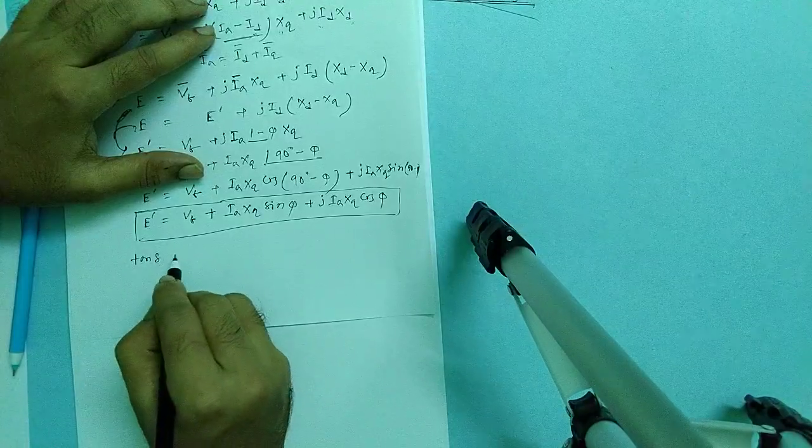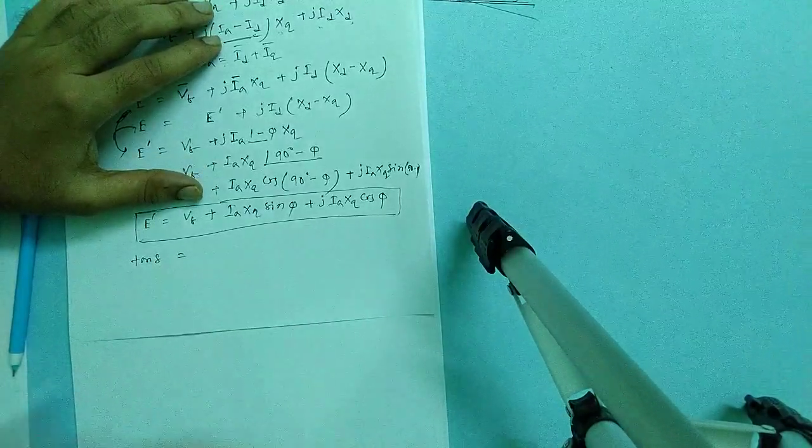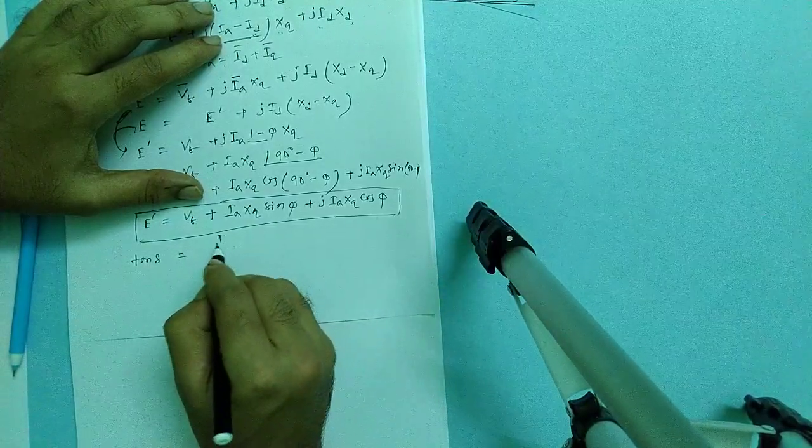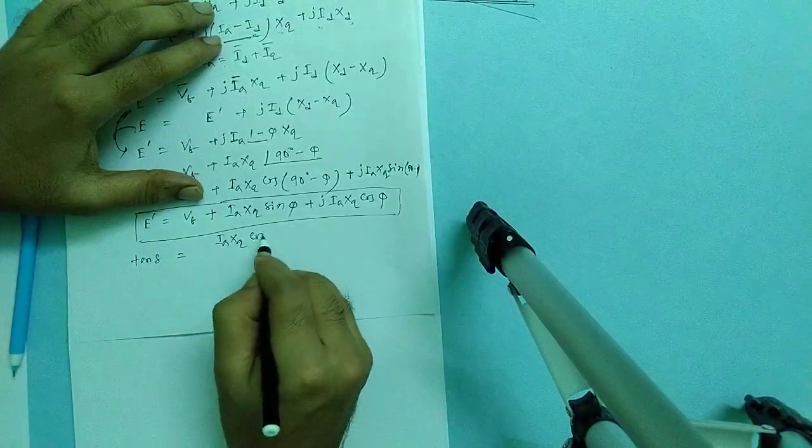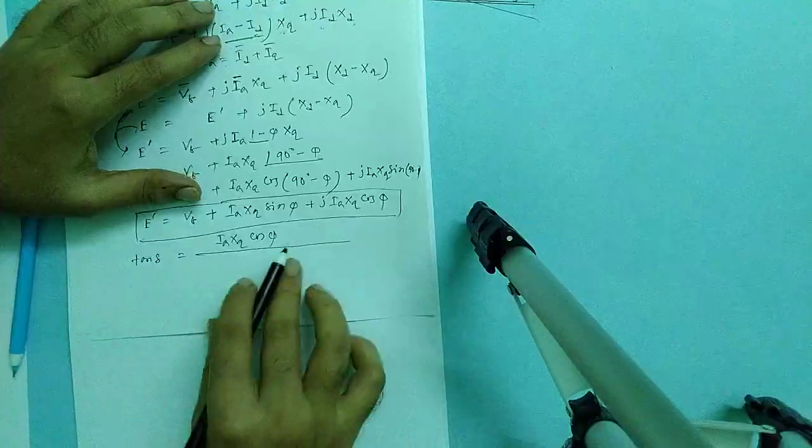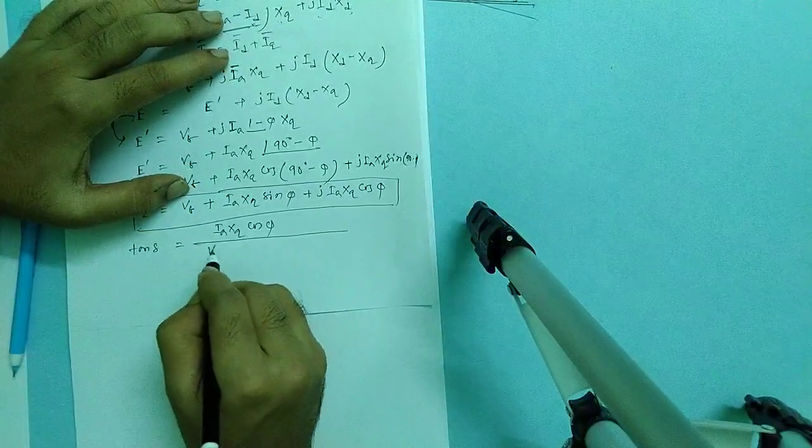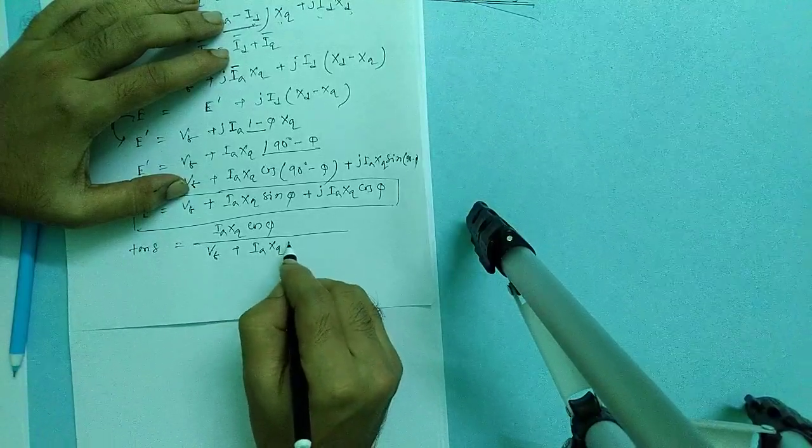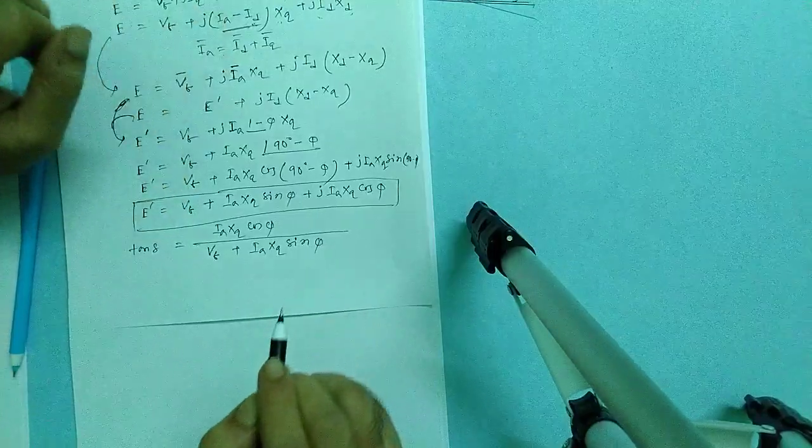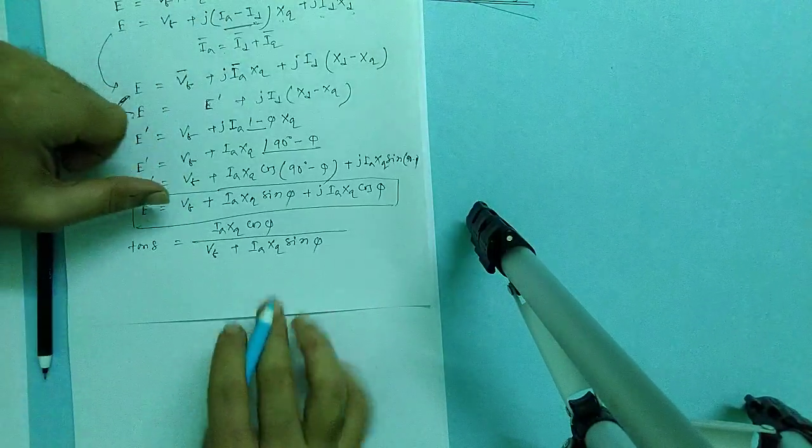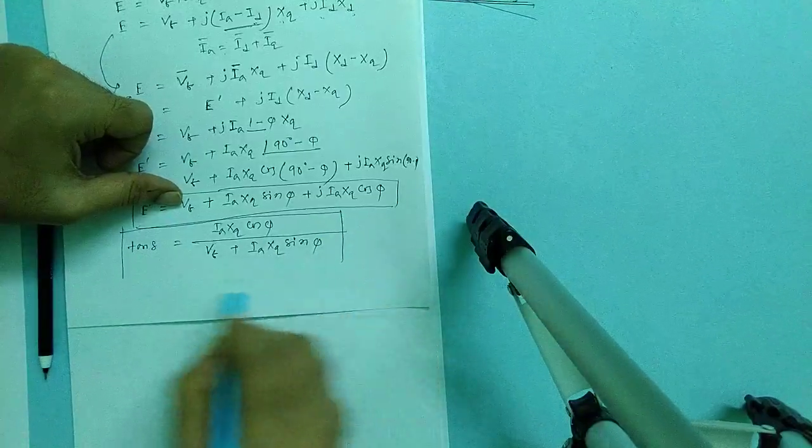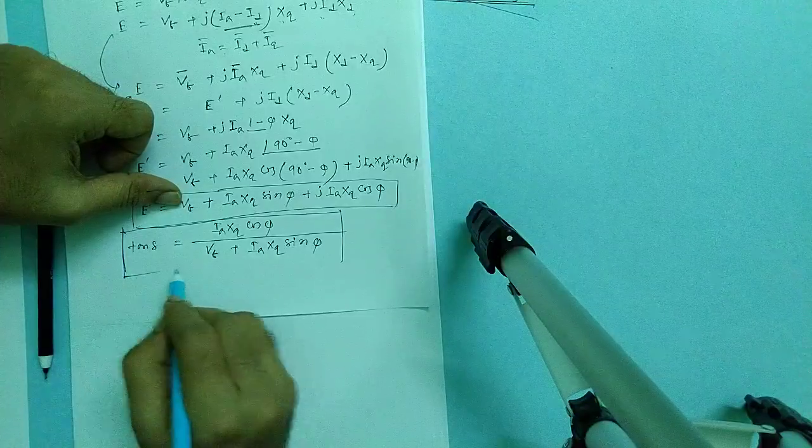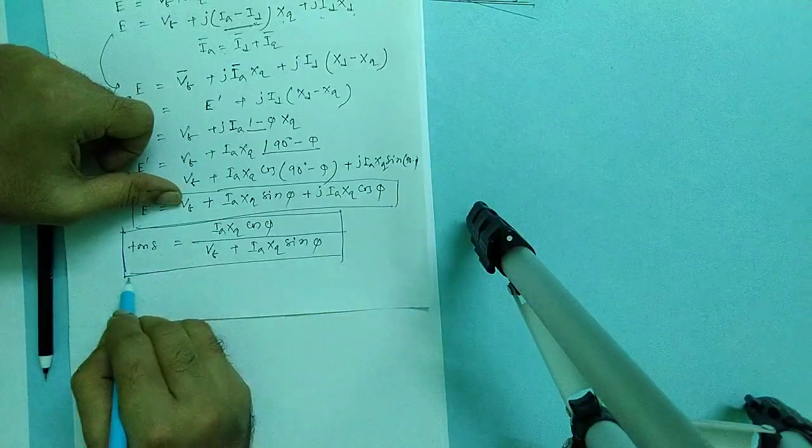Just simple, we can write as tan of del. Tan of delta is imaginary part by real part. What is imaginary part? That is i_a X_q cos phi by V_t plus i_a X_q sin phi.